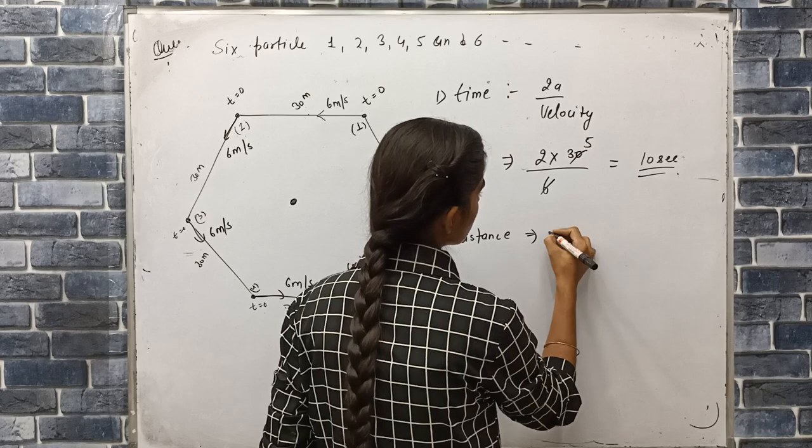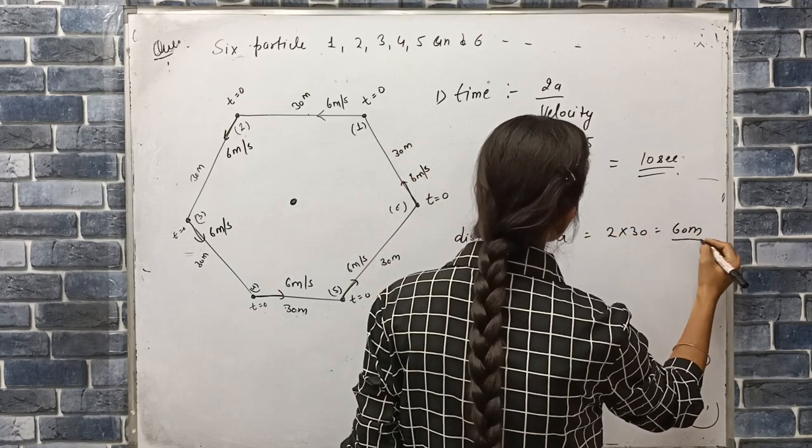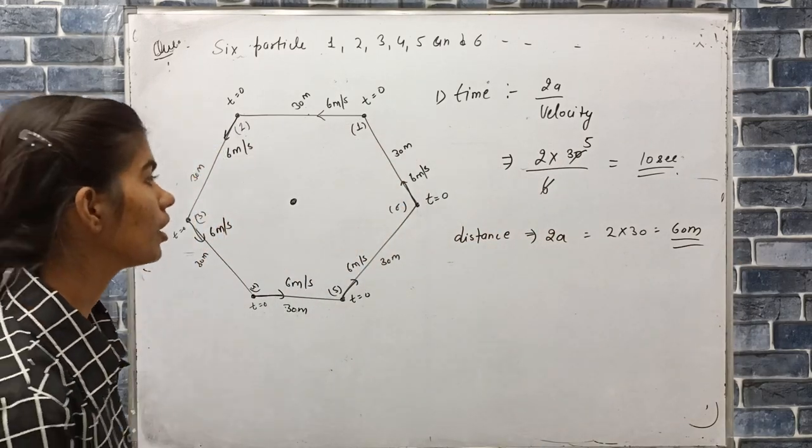The second one. Distance hojaega 2a ke equal, yanniki 2 into 30. 60 meter in ka kya hojaega? Distance hojaega. 60 meter kya hooga in ka? Distance.